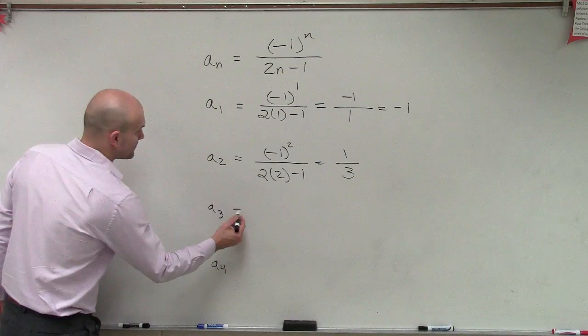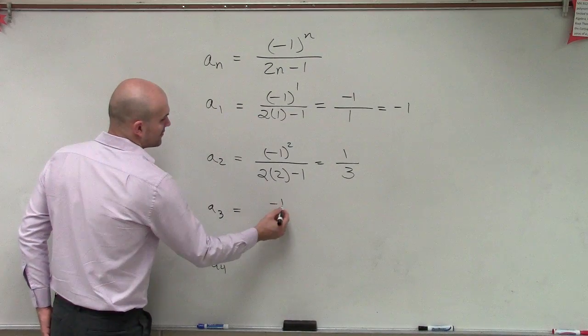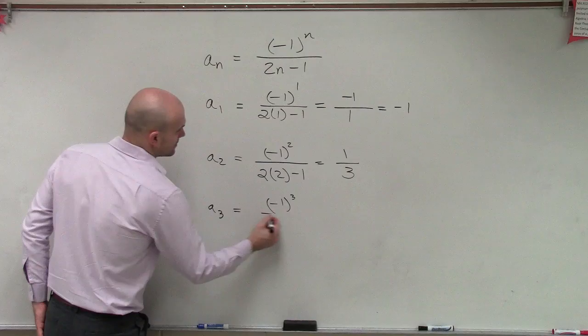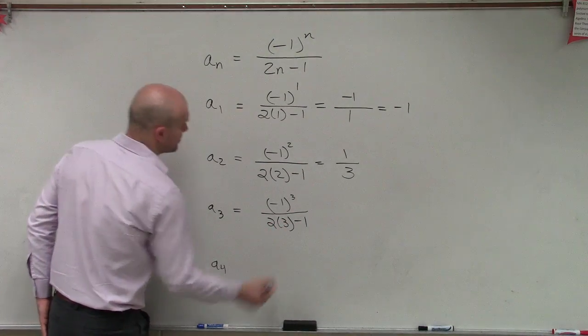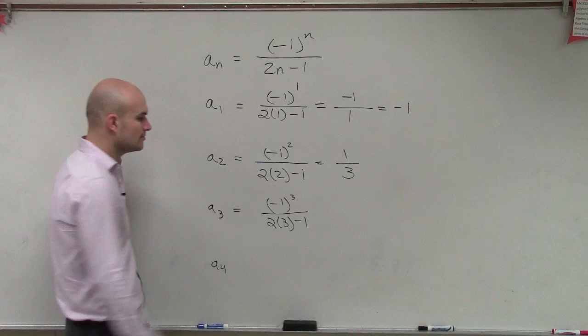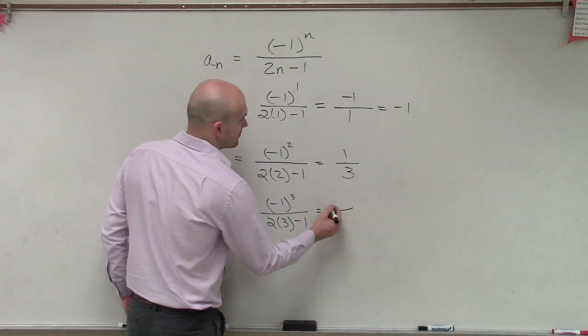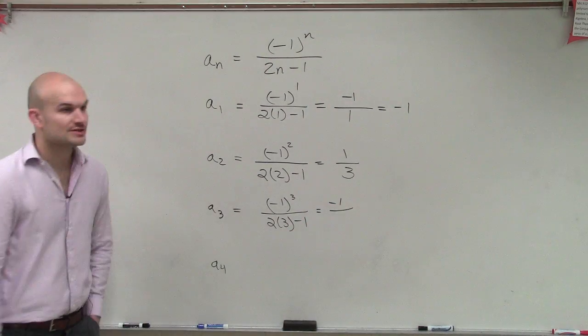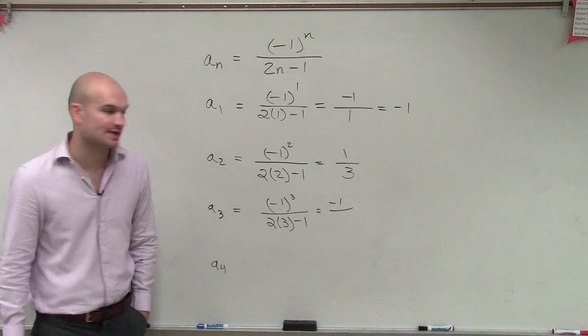Then we do a sub 3. So now we have negative 1 cubed divided by 2 times 3 minus 1. Well, negative 1 cubed, we now know, is negative 1. And 2 times 3 is 6 minus 1 is 5.